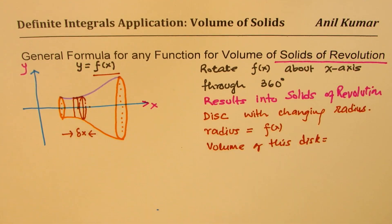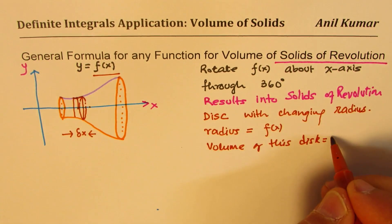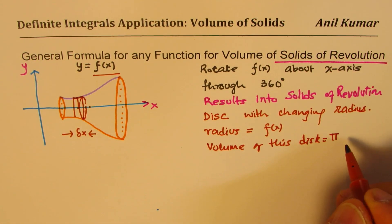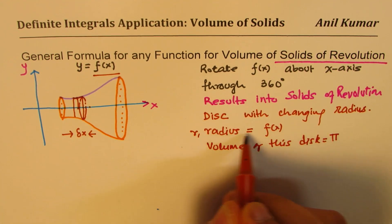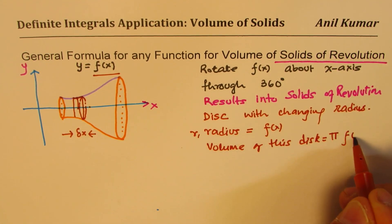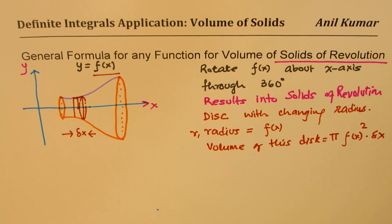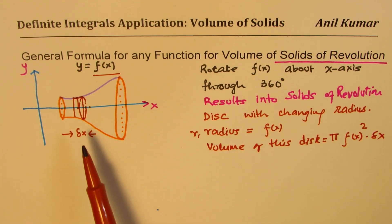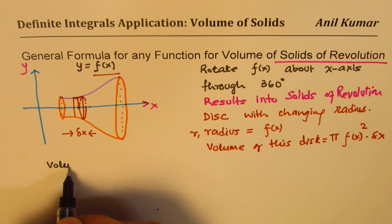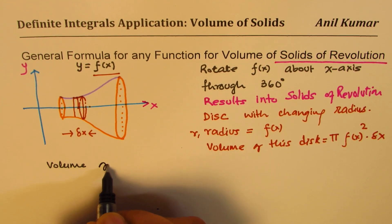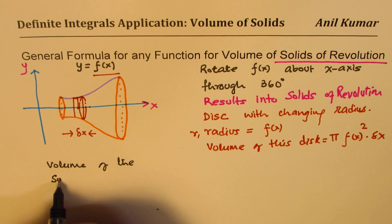In that case, what is the volume of this disk? Well, the volume will be that circular portion, the area of the base, which is pi r squared. The radius r is f of x, so pi r squared times this width delta x. So that becomes the volume of this particular disk.